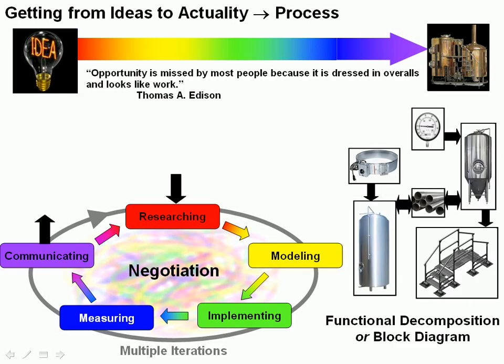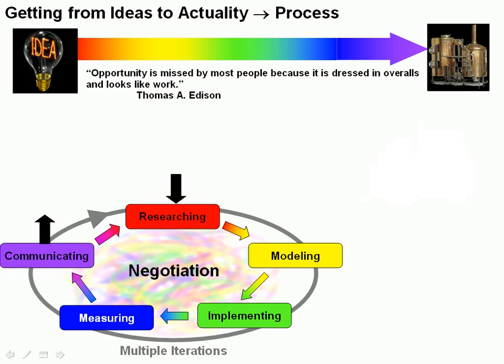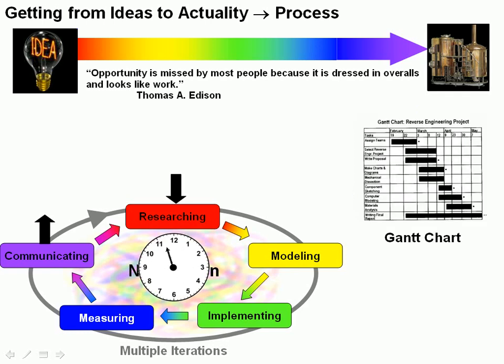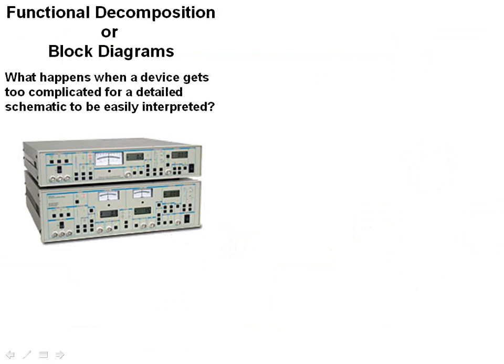One of these is the functional decomposition or block diagram. Another one is the work breakdown structure, which manages the effort required. Another one manages your most valuable resource, which is always time — you find you're always short on time. That's the Gantt chart. And finally, we'll talk briefly about the role of the project manager as well as a lead engineer on a project. So let's get started with the functional decomposition or block diagram. The really key thing here is the word functional. A block diagram basically breaks down a project into its functional units, and this is an art as well as a science.